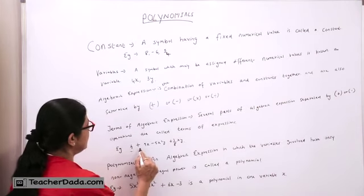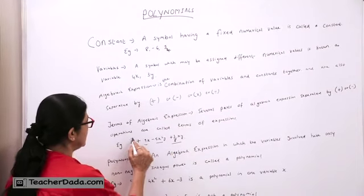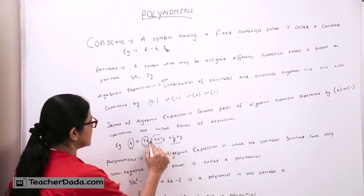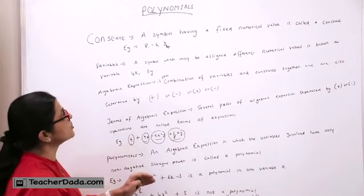For example, 4 plus 9X minus 5X square plus 3 upon 8XY. So this is the first term, this is the second term, this is the third term, and this is the fourth term. Now we come to the actual topic, polynomials.